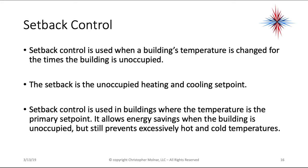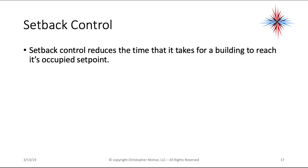Set back control is used when a building's temperature is changed for times the building is unoccupied. The set back is the unoccupied heating and cooling set point. It allows energy savings when the building is unoccupied but still prevents excessively hot and cold temperatures. Set back control also reduces the time it takes for a building to reach its occupied set point — rather than turning a system off completely, we change the temperature to reduce the heating or cooling needed when the building becomes occupied again.